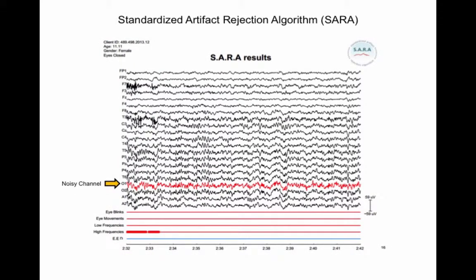Often, the raw EEG will contain one or two channels that show high-frequency artifacts almost constantly during the recording. Instead of rejecting most of the EEG, SARA recognizes these channels and marks them in red in the report. These channels will not be de-artifacted for high-frequency artifacts.